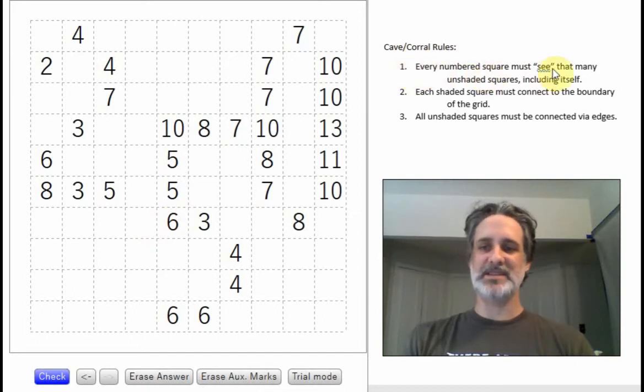One, every numbered square must see, in quotes, that many unshaded squares, including itself. So this three has to see three unshaded squares. This is probably going to be the first deduction we make, but that's going to be important to us.